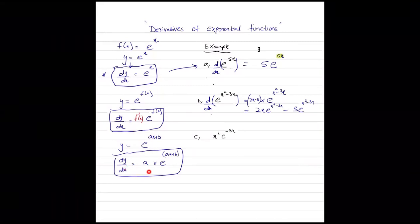As a general rule, if we have e raised to the power of ax plus b, the differentiation is going to be e to the power of ax plus b times the differentiation of the power, a. Now for part c, these are two functions being multiplied together. Would it be minus 3x squared e to the power minus 3x? No — you are forgetting that these are two functions multiplied together. So we are going to apply the product rule.